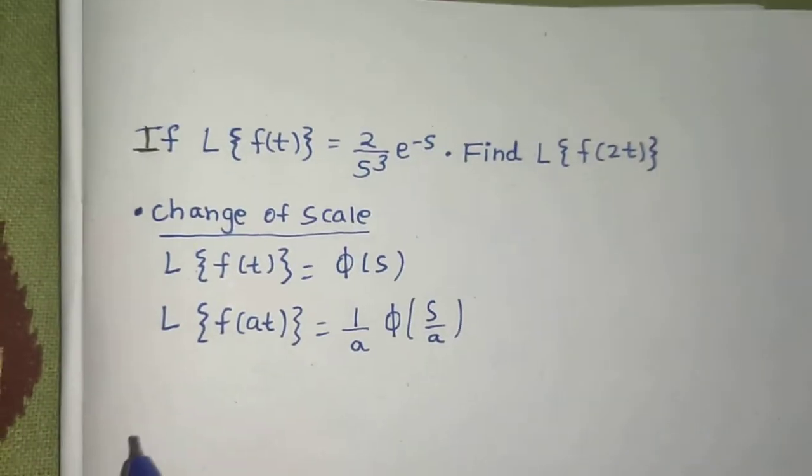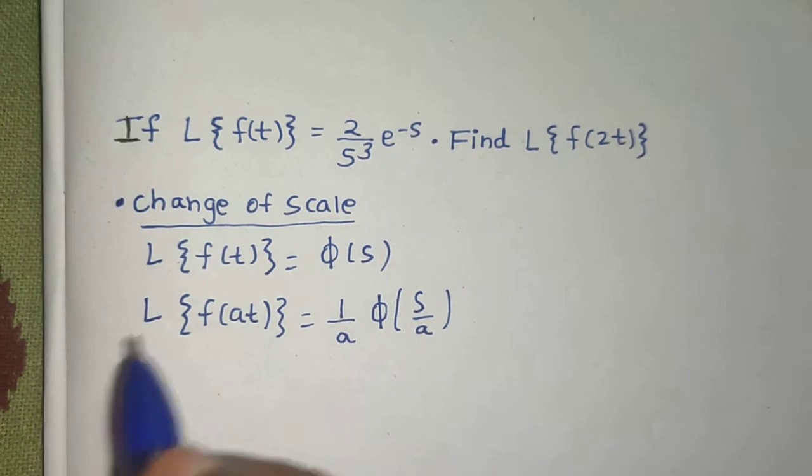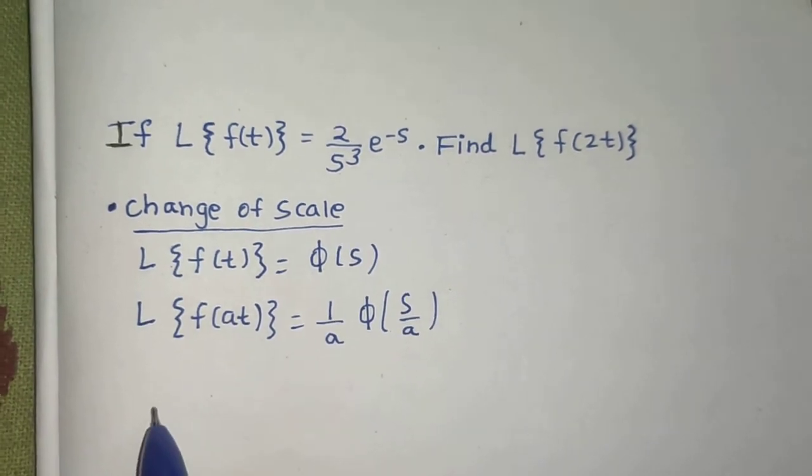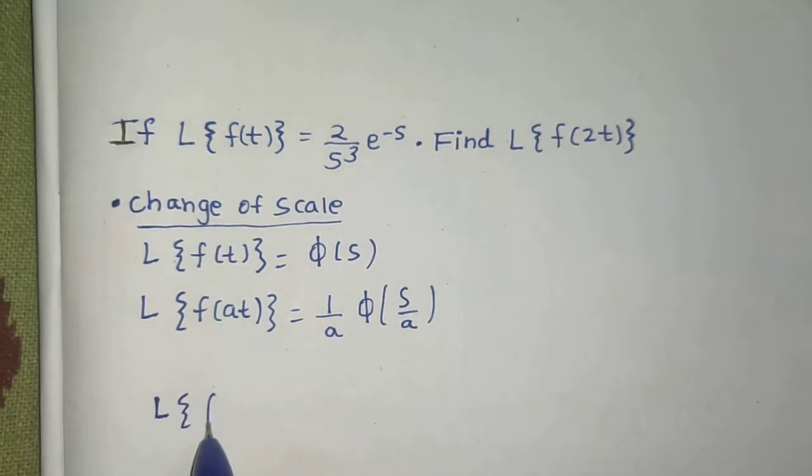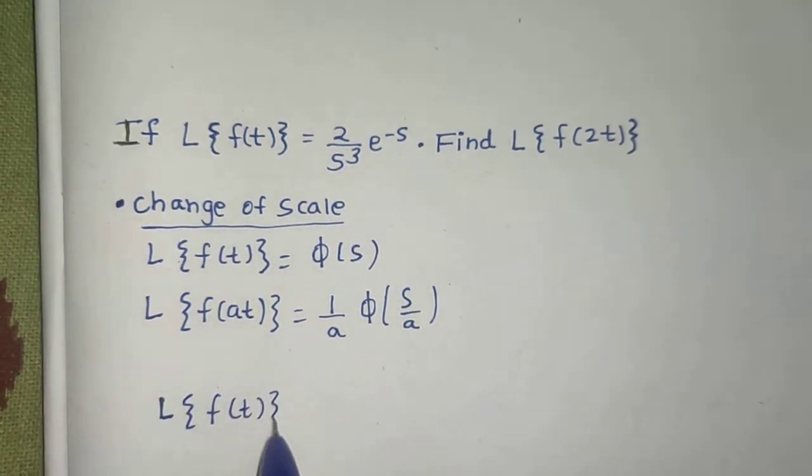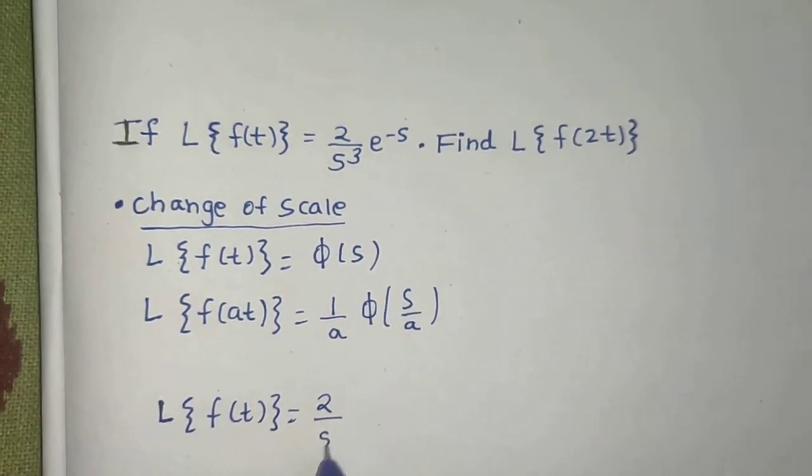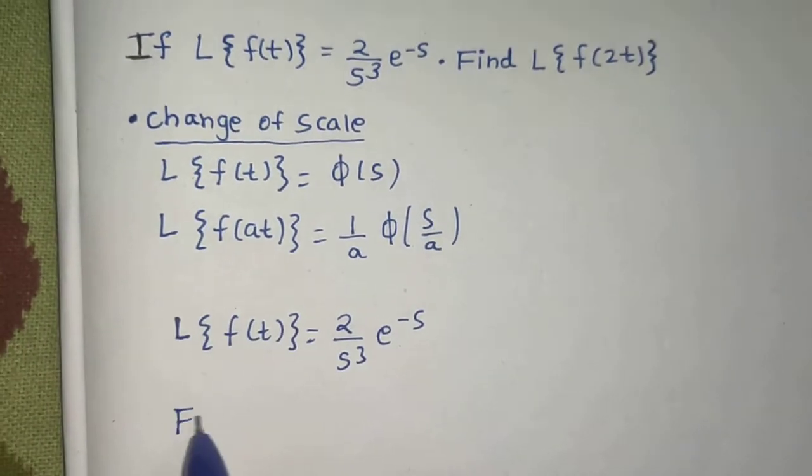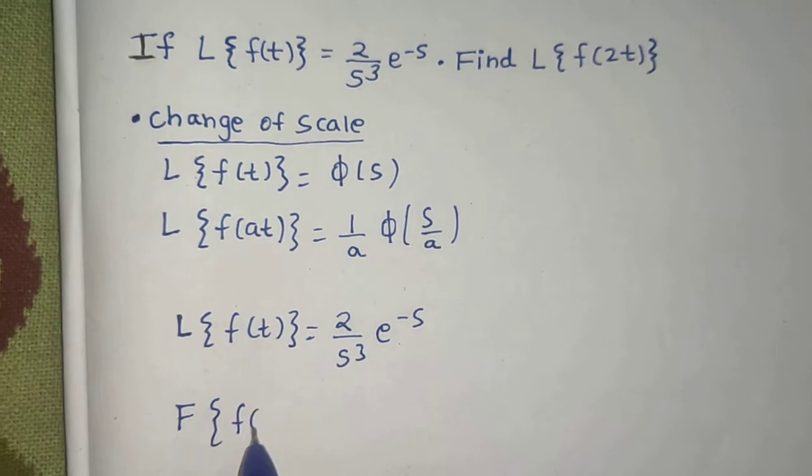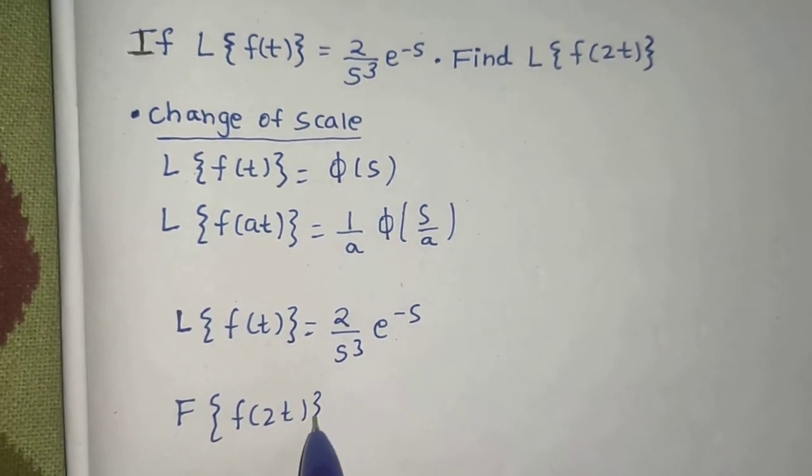So applying change of scale in this particular question, we already know Laplace of f of t in this particular question is 2 upon s cube e power minus s. So Laplace of f of 2t will be: